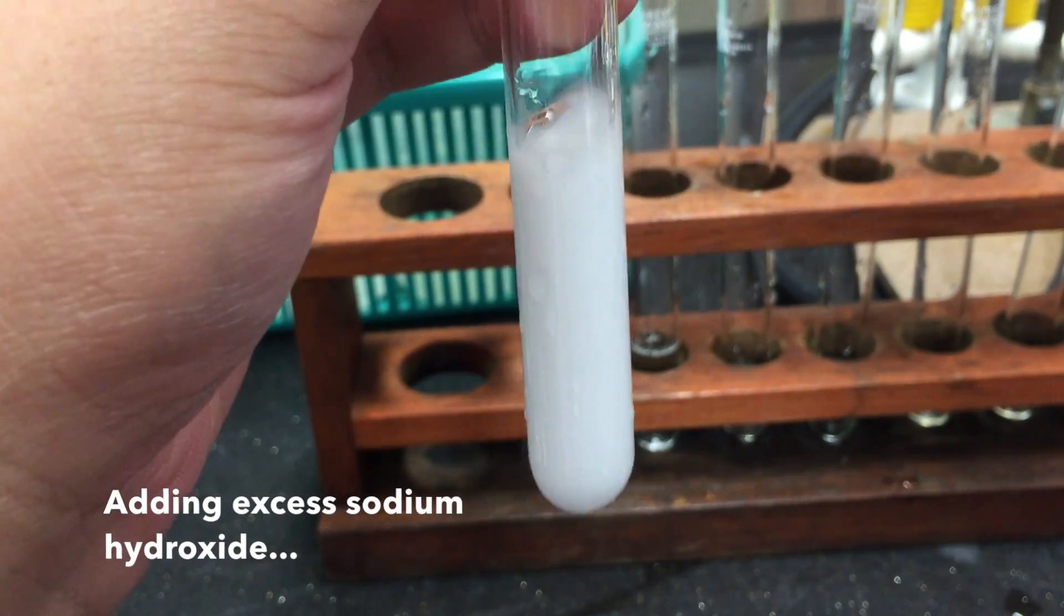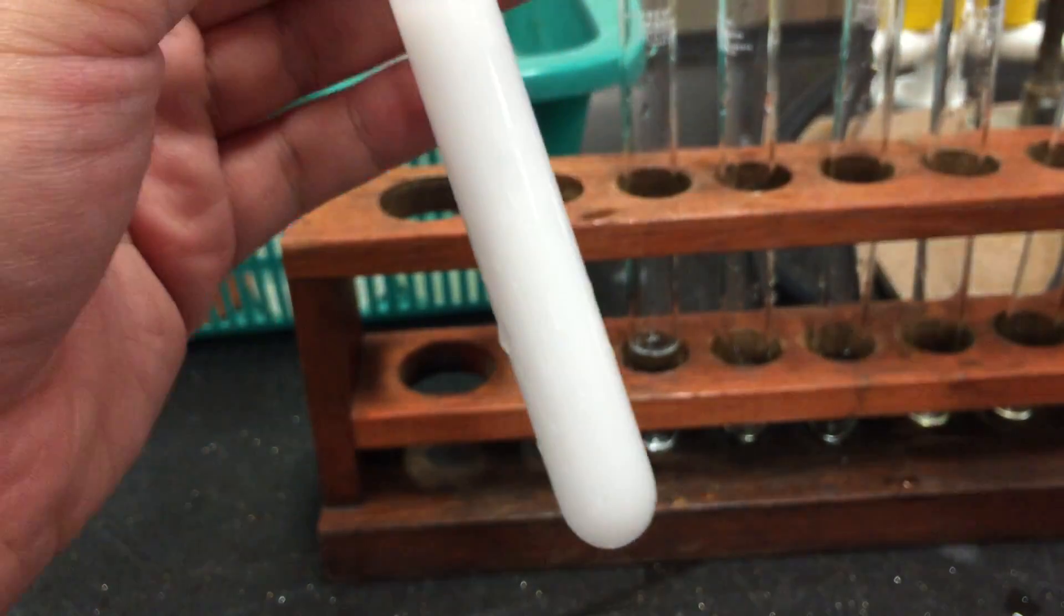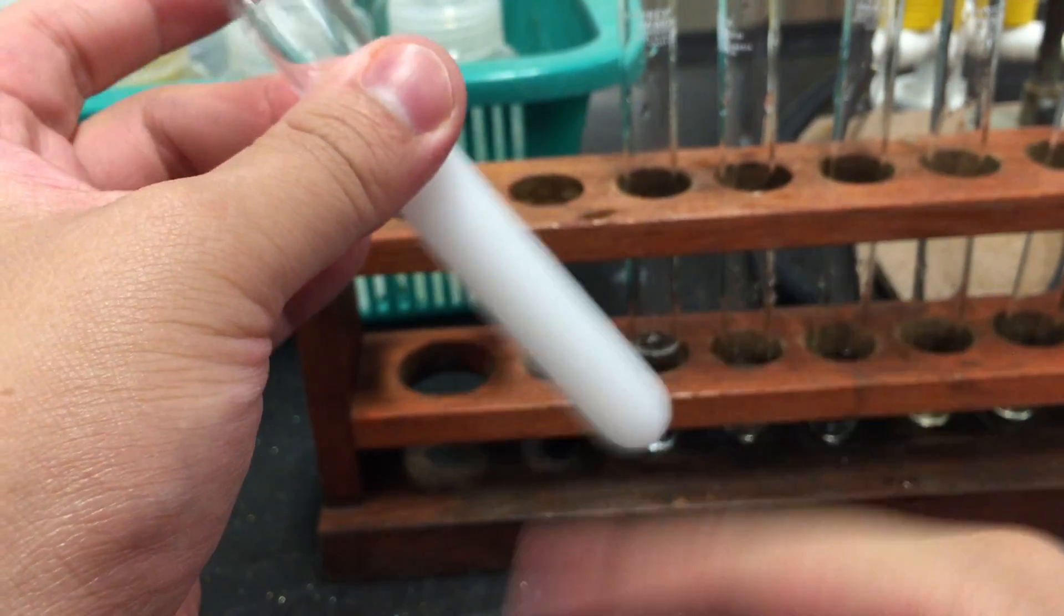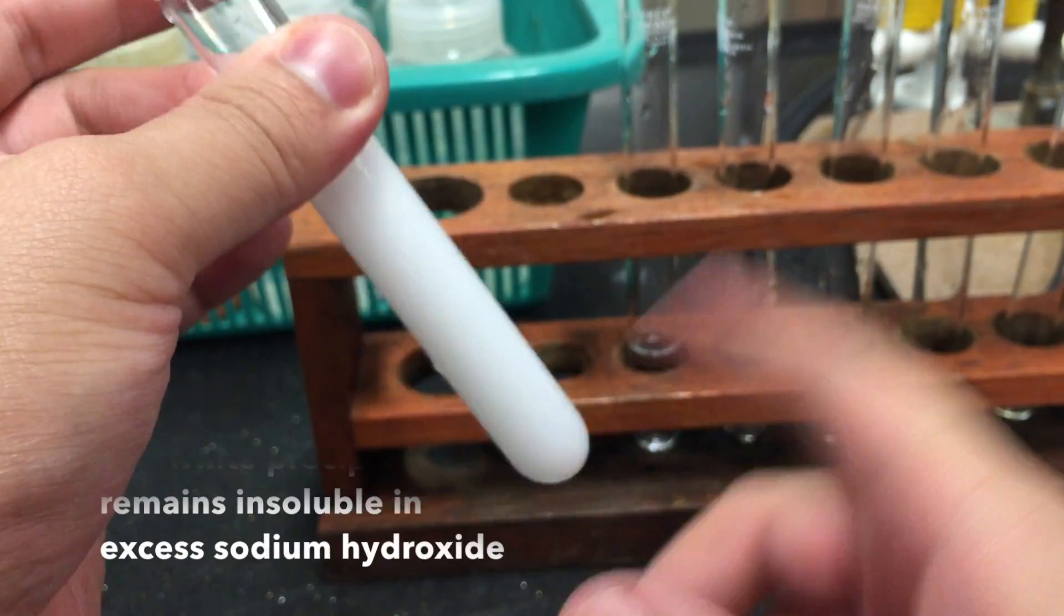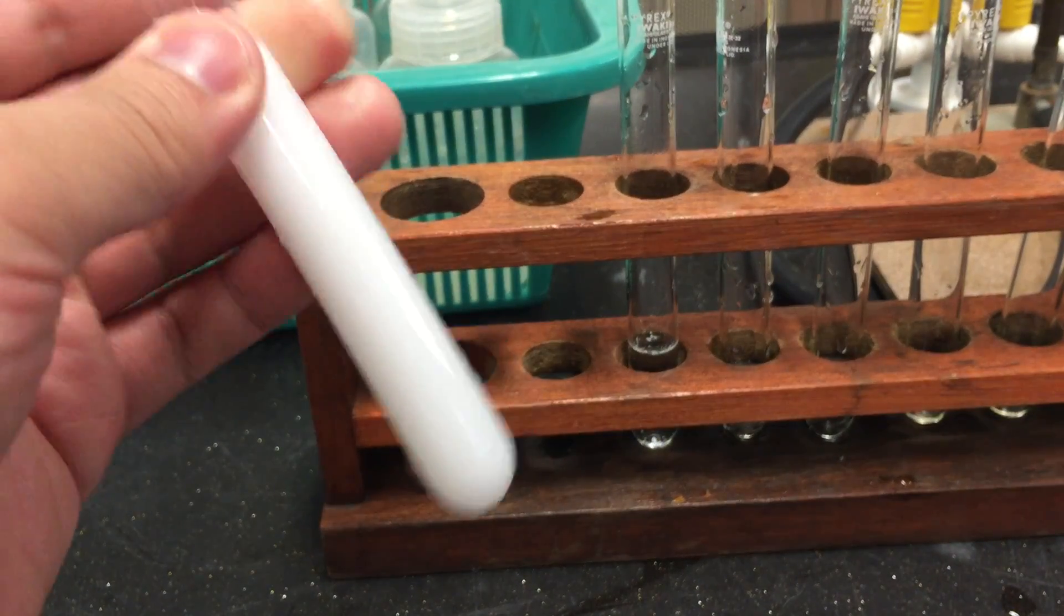Proceed to add an excess of sodium hydroxide. Notice that the white precipitate remains insoluble in excess sodium hydroxide.